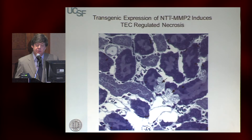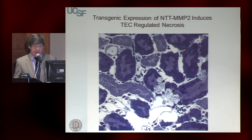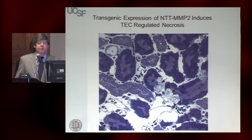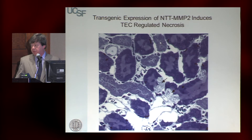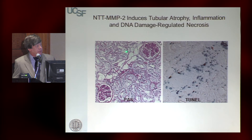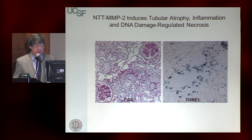To test this, I'll show human data confirming this takes place in people. We generated transgenic mice expressing the internal truncated isoform. This is basically a tubular epithelial cell undergoing regulated necrosis — and this is without any superimposed injury. So this isoform in and of itself is sufficient to trigger tubular epithelial cell regulated necrosis. If you follow these mice over time, they develop severe tubular atrophy associated with DNA fragmentation, very characteristic of regulated necrosis.